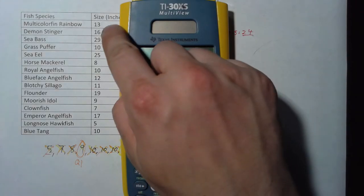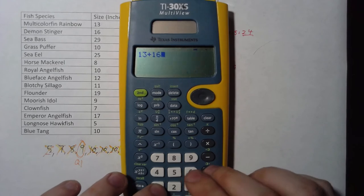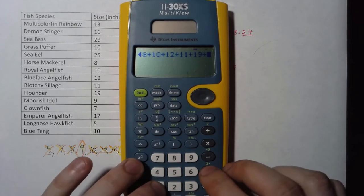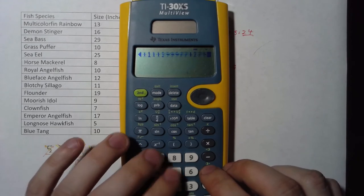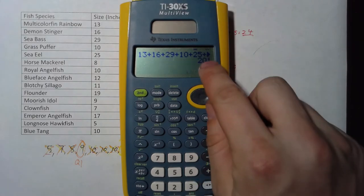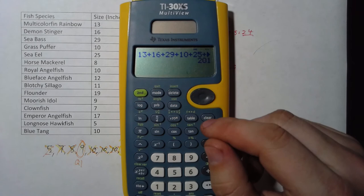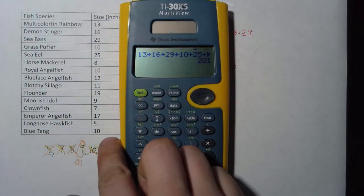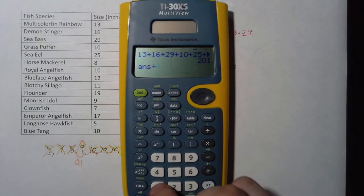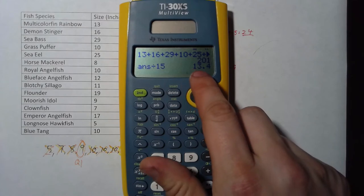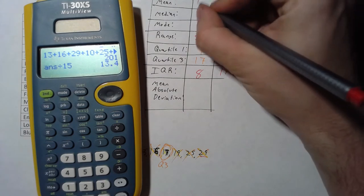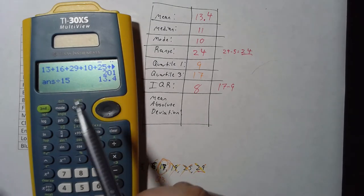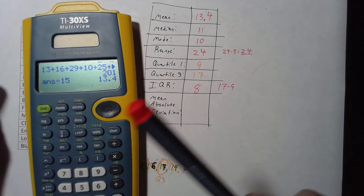Step one for the mean. Add everything. So we do 13, plus 16, plus 29, plus 10, plus 25, plus 8, plus 10, plus 12, plus 11, plus 19, plus 9, plus 7, plus 17, plus 5, plus 10. And we get 210. Now that number in and of itself is useless to us. We don't care. What we're supposed to do next, after we add everything, is we divide by however many data points we have. I counted earlier, and I know we have 15 fish. So I will divide by 15. And that gave me a nice round 13.4. So my answer for my mean, 13.4. Something that you should know, if you get an answer that has a repeating decimal that continues on, a good rule of thumb is to round to the nearest hundredth or the nearest tenth.